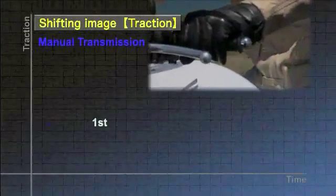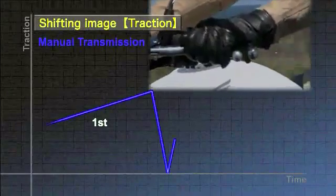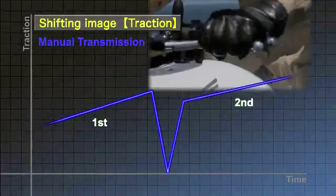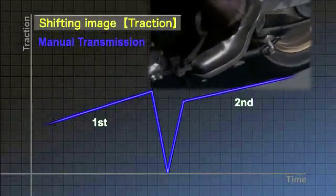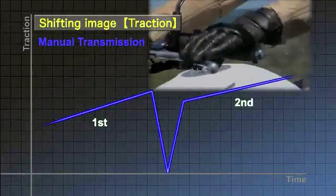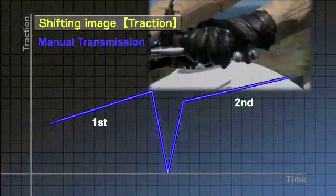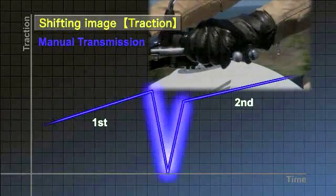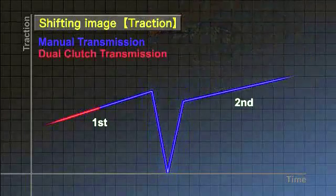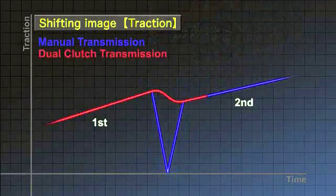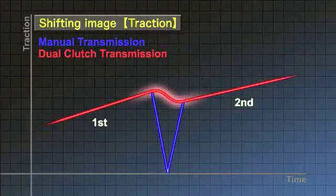Let's compare it with a manual transmission. To shift gears on a motorcycle with a manual transmission, the driver must operate the clutch and the throttle to disconnect the engine's rotary motion. The dual clutch transmission has two clutches that engage and disengage alternately without interruption. This leads to seamless gear shifting that doesn't interrupt the driving force.